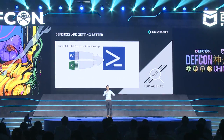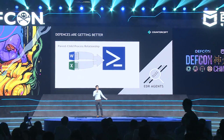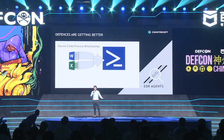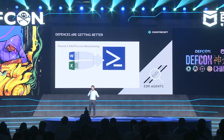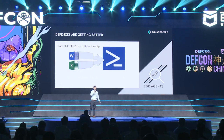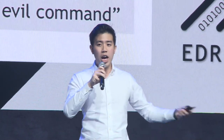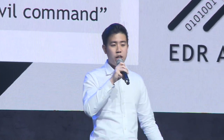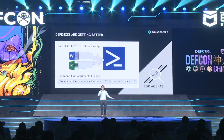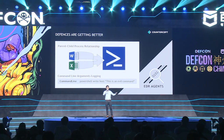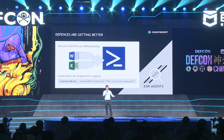With the rise of EDR agents we can analyze parent-child process relationships, giving us great visibility on anomalous PowerShell execution. For example, we can see Microsoft Word or Excel spawning a PowerShell process, which is suspicious because you wouldn't expect a Word document to spawn PowerShell. We can also see the command line arguments passed to the newly spawned PowerShell process, letting us see exactly what the code was doing — such as printing out an evil command.